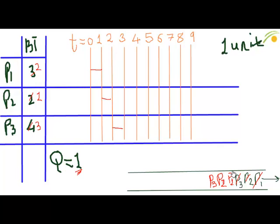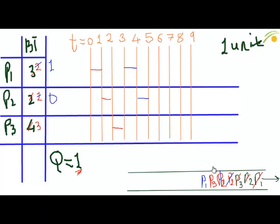Now it's P1's turn. P1 will perform its operations and the remaining burst time of P1 becomes 1, and P1 will join the queue again. Now it's P2's turn. P2 will perform its operations and the remaining burst time of P2 becomes 0. Since the burst time of P2 is 0, it will not join the queue again.